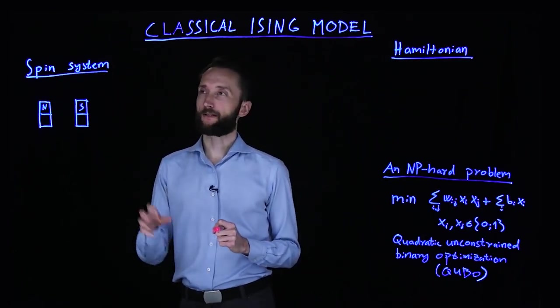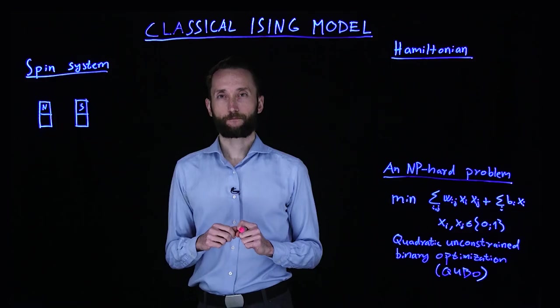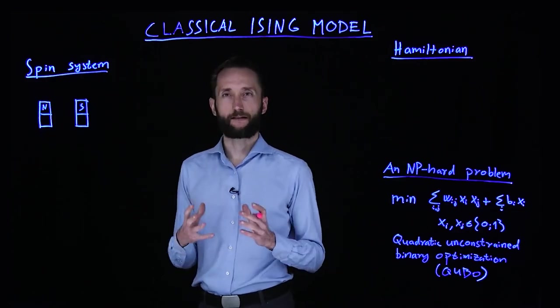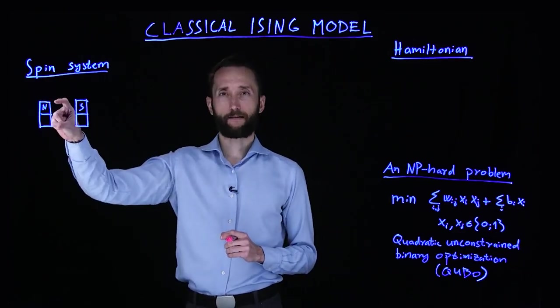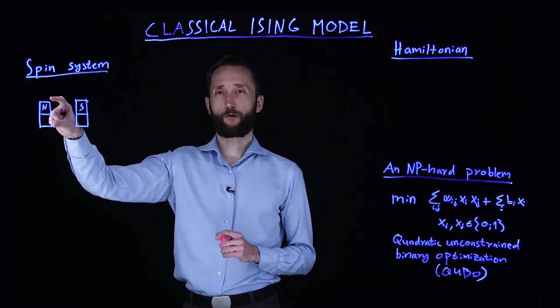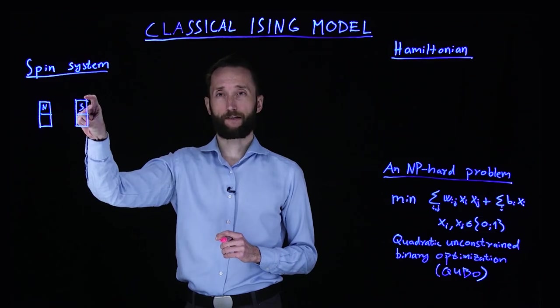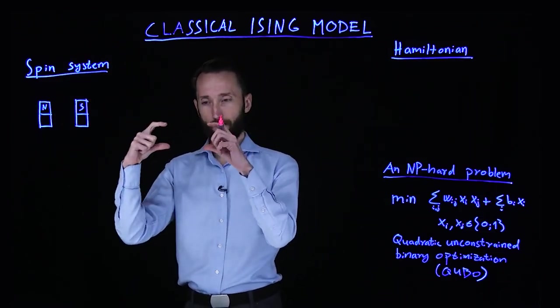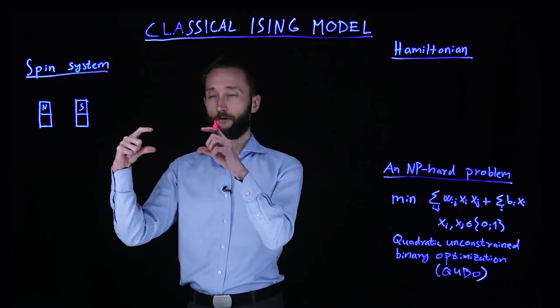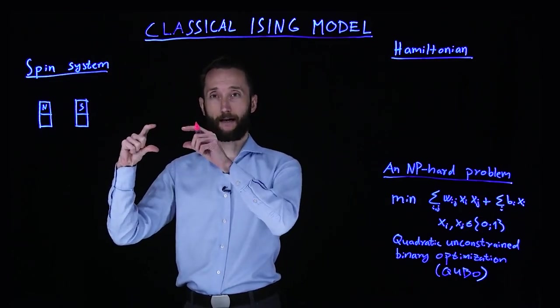So let's start by introducing a spin system. A spin is a two-state system. For instance, you can think of a magnet having north phase pointing up or south phase pointing up. And you know, if you take two magnets and you approach them, then they want to anti-align.